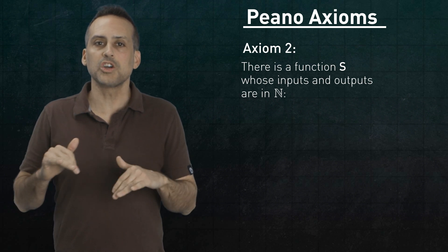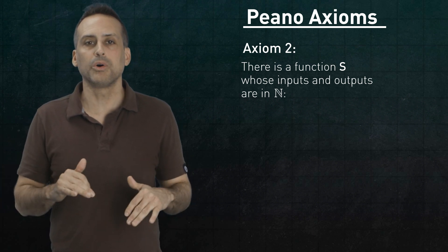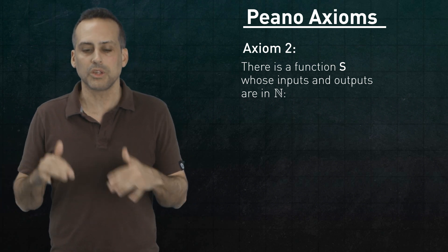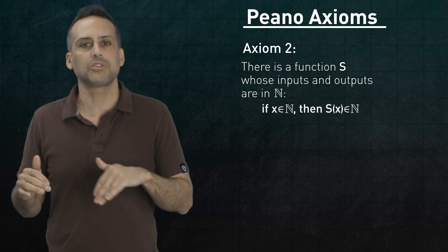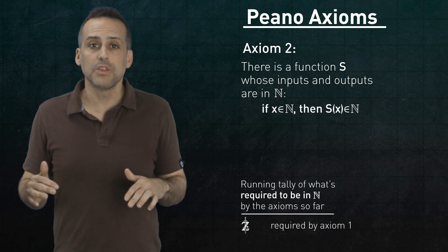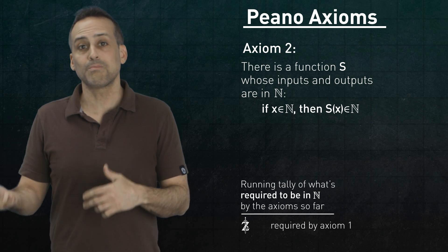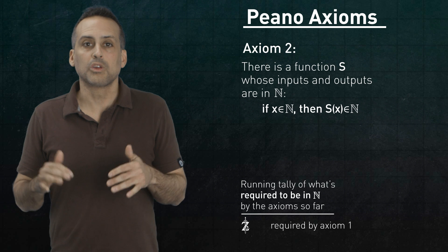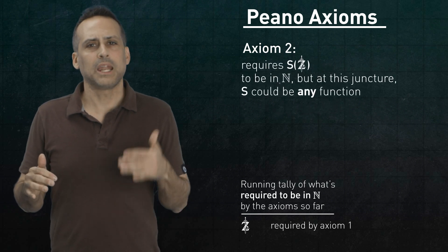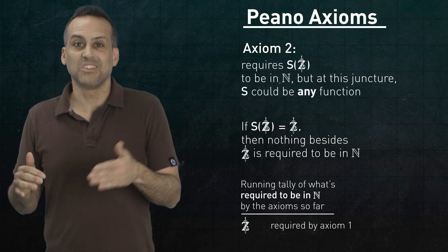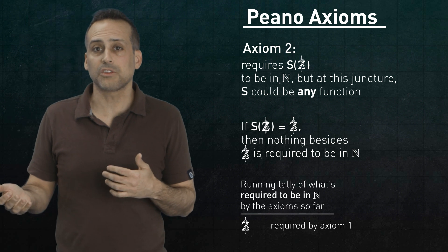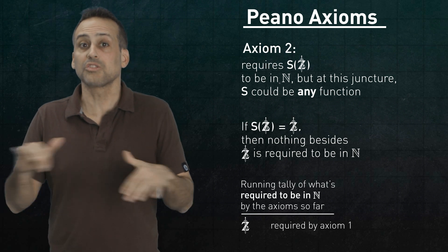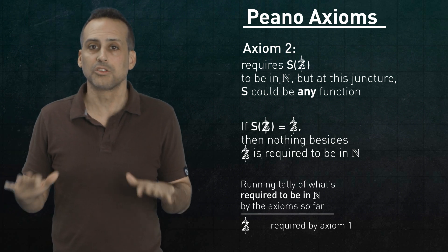There exists a function s whose inputs and outputs are elements of n. In other words, if x is in n, then s of x is also in n. Now, on its own, this doesn't buy us anything, because we haven't specified the mechanical rule underlying s. For instance, suppose that Zelda is in the set, and it turns out that s of Zelda equals Zelda. This would still satisfy axioms 1 and 2, but it looks nothing like the natural numbers. So let's fix that.